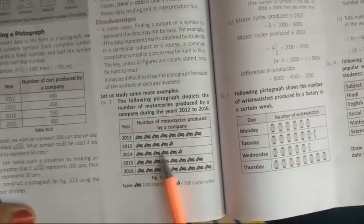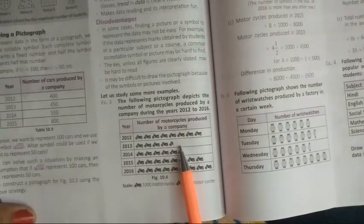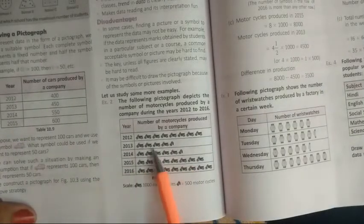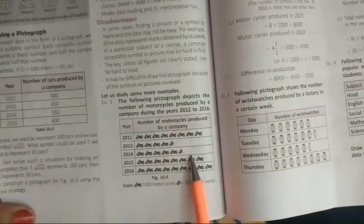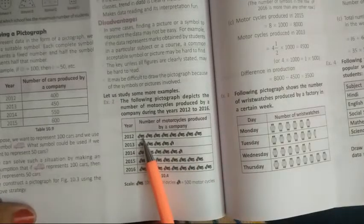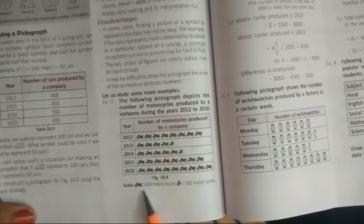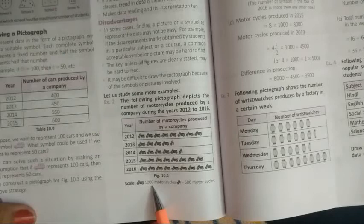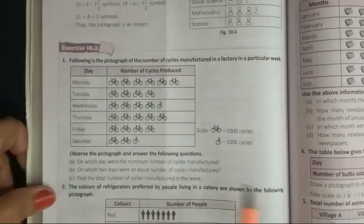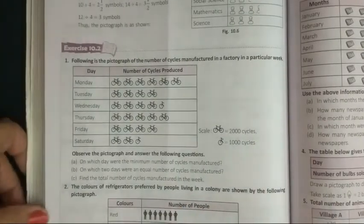Jaise yaha pe kya hai? Motorcycle product kar rakhi hai, ek company ne in years me, to yaha pe unka data bana rakha hai. Yaha pe kya de denge? Jaise one jo motorcycle hai, woh kis ke equal dikha rakhi hai? Hundred motorcycle ko represent kar rakhi hai. Isi tarah student, hamari, yeh exercise hai. Dekho, first question, exercise 10.2 on page number 190.